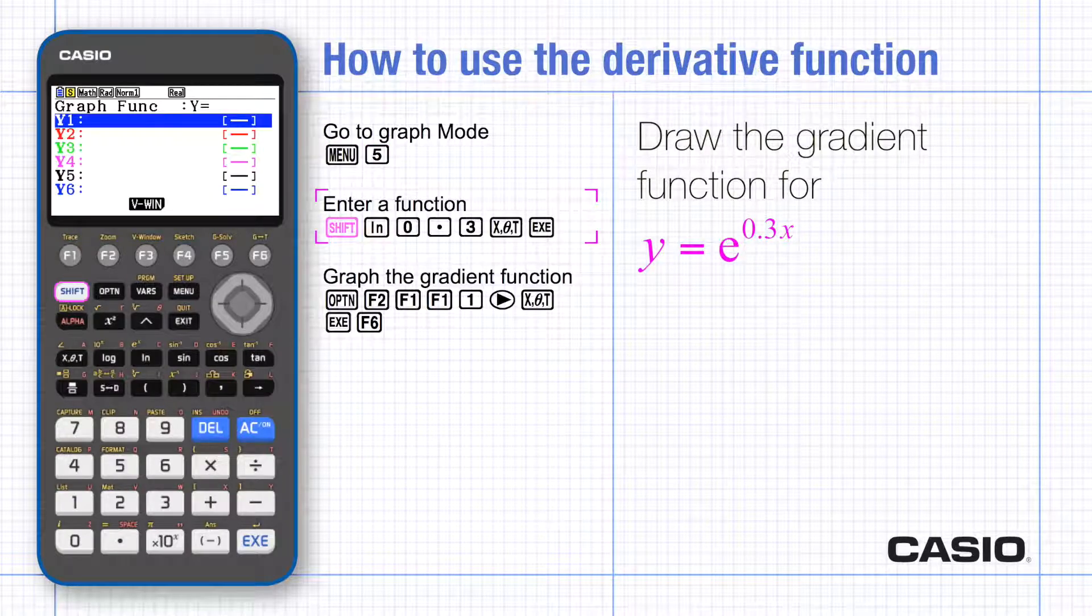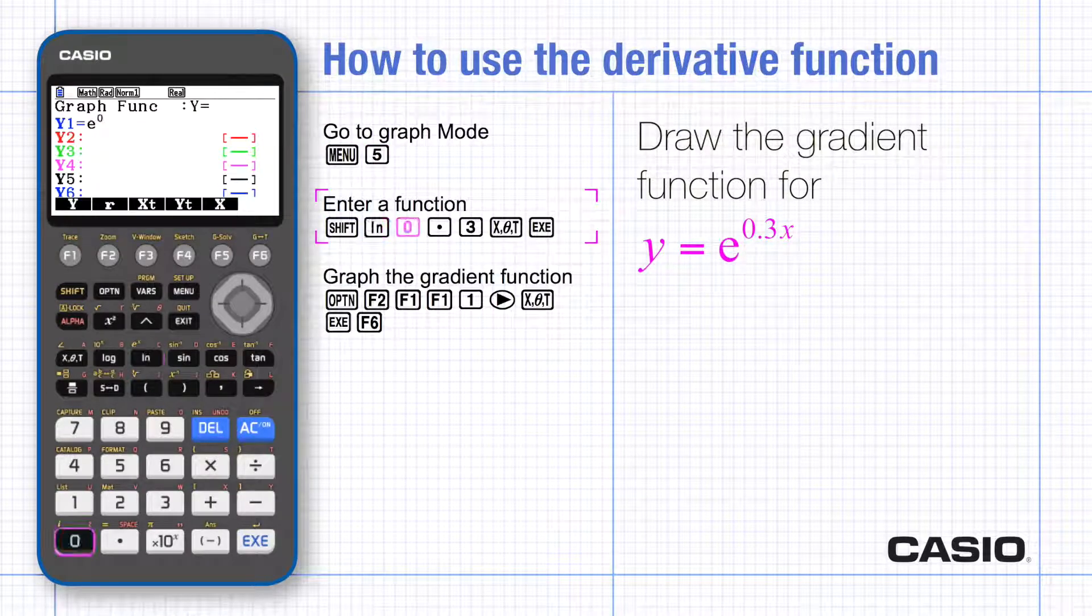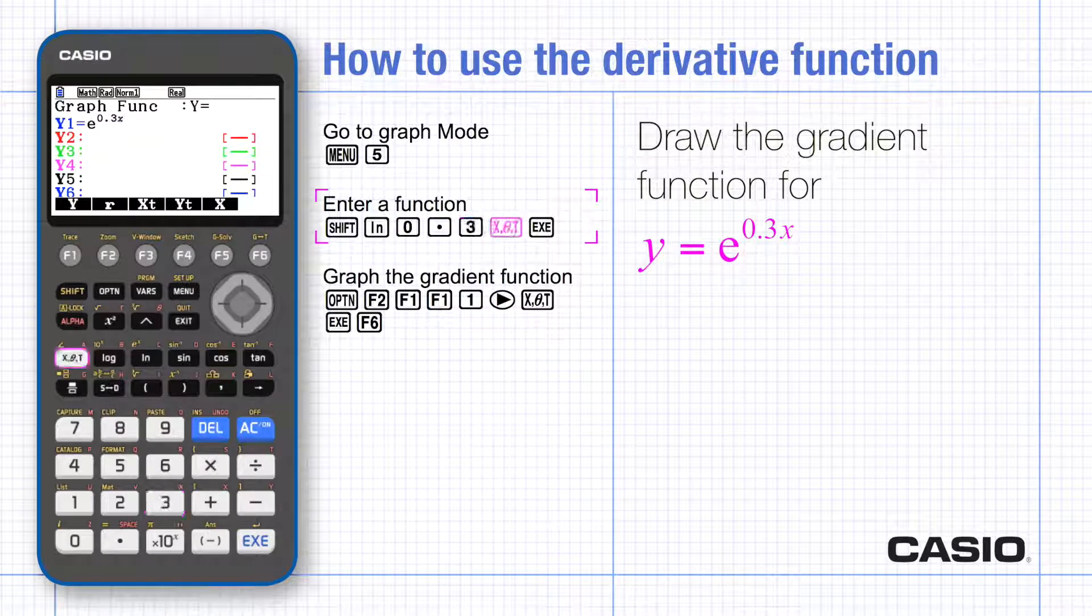Type the function into y1 and execute. Use the option key and calc to find the derivative. Use y1 to save typing the function again.